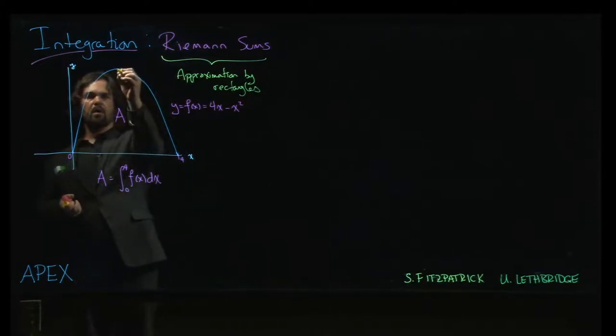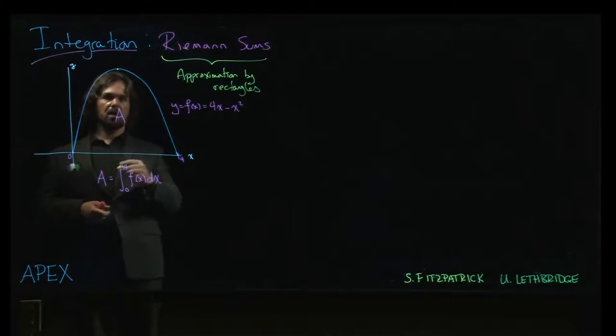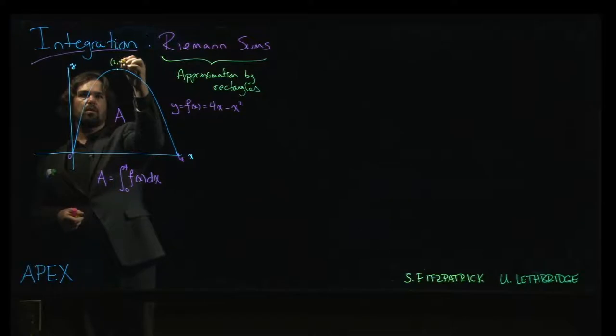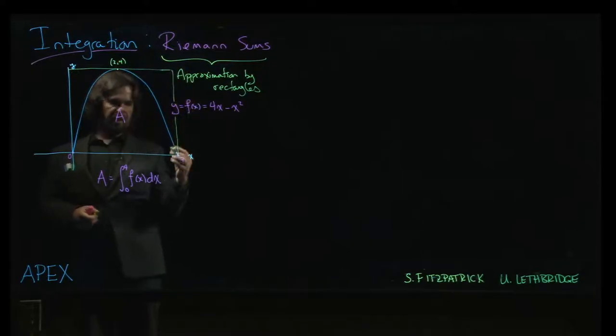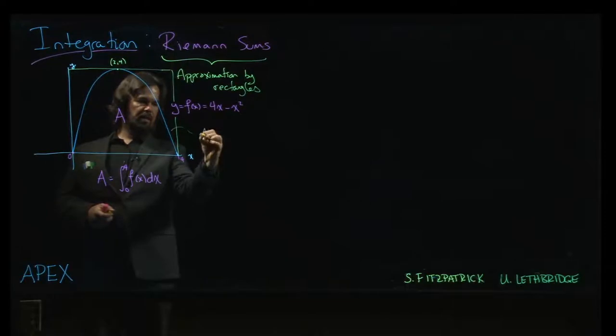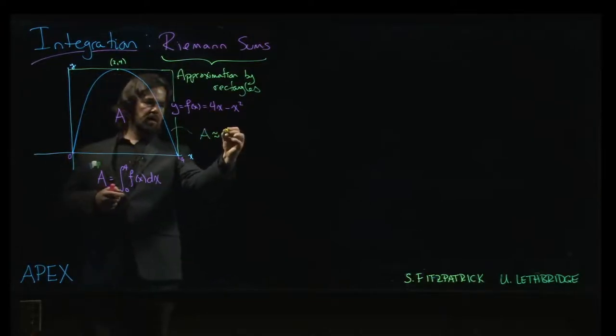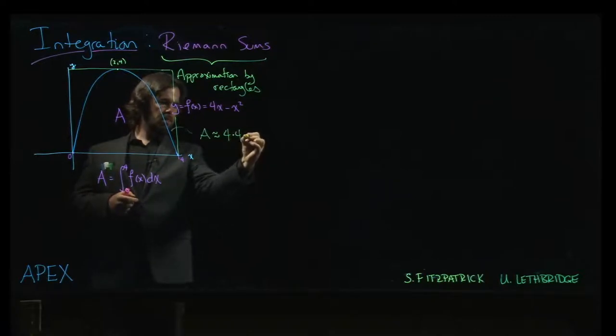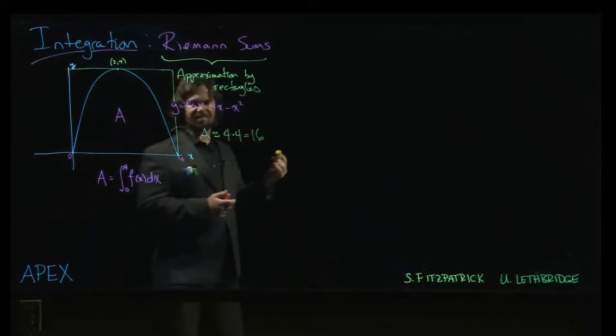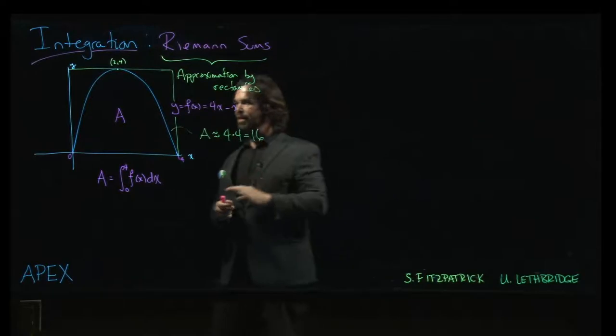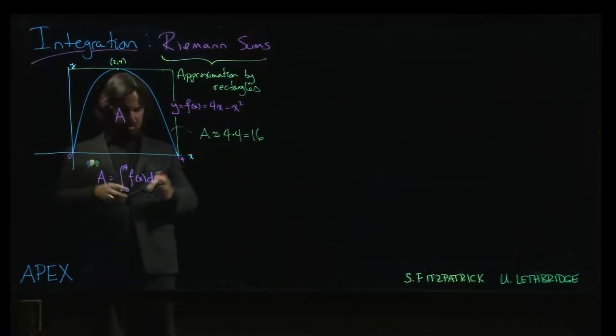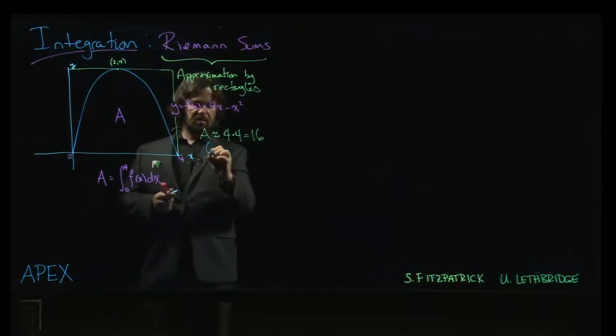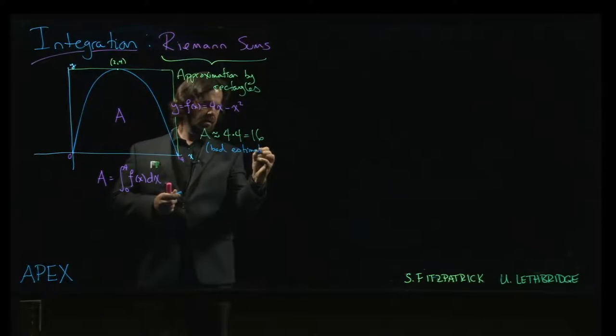That point there when x is equal to 2, this is the peak at (2, 4). Here's a bad approximation. You can just draw in this enclosing rectangle, and we could use that rectangle to say the area is approximately 4 by 4, which is 16. Well, that's obviously not the area. It's a significant overestimate because the rectangle is including all of this stuff here and all of this stuff here, which we don't want to be including in our area. So this is a bad estimate.